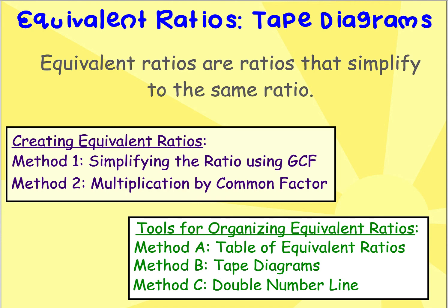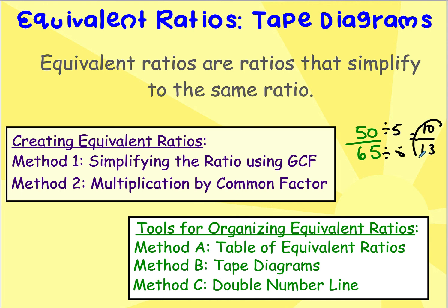Similarly, we could look at a ratio like 50 to 65 and simplify it, since both are divisible by 5, giving us 10 over 13. Since 10 and 13 are relatively prime and can't be simplified further, we know that 10 to 13 is an equivalent ratio because 50 over 65 simplifies to 10 over 13.